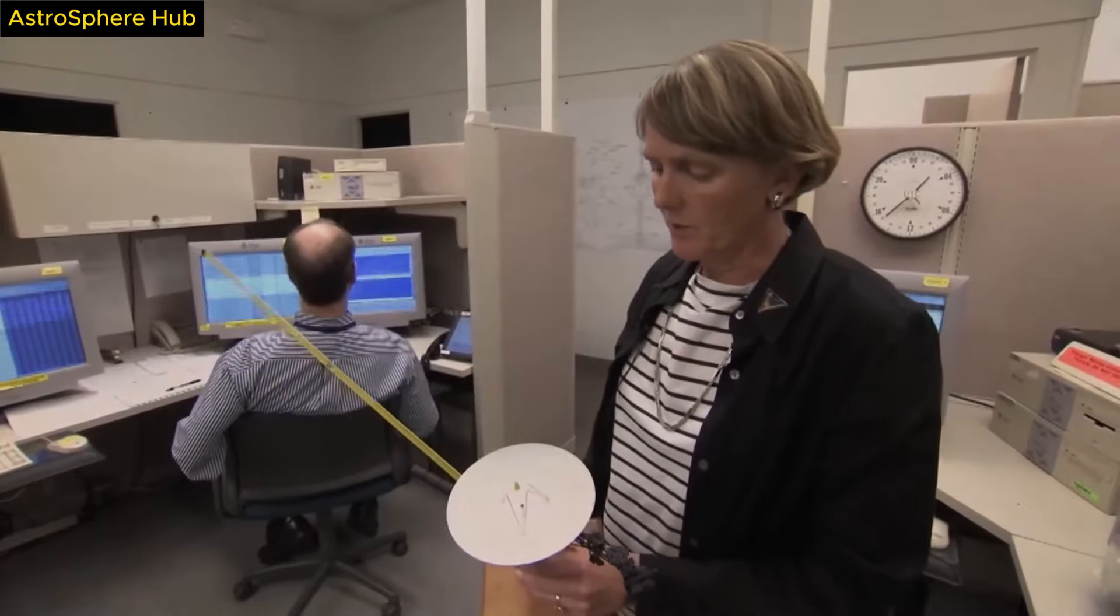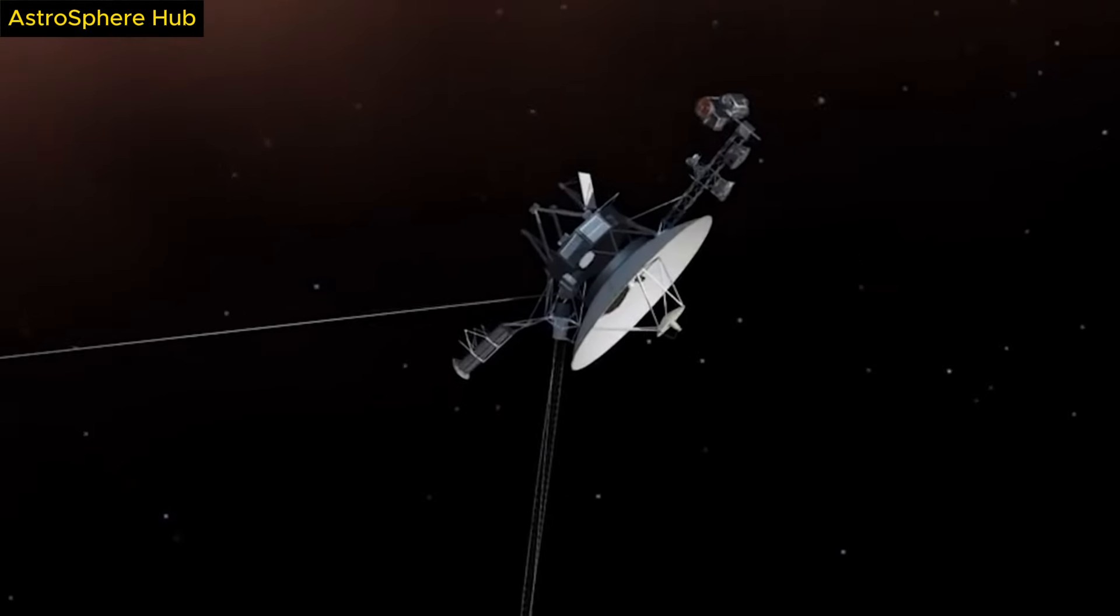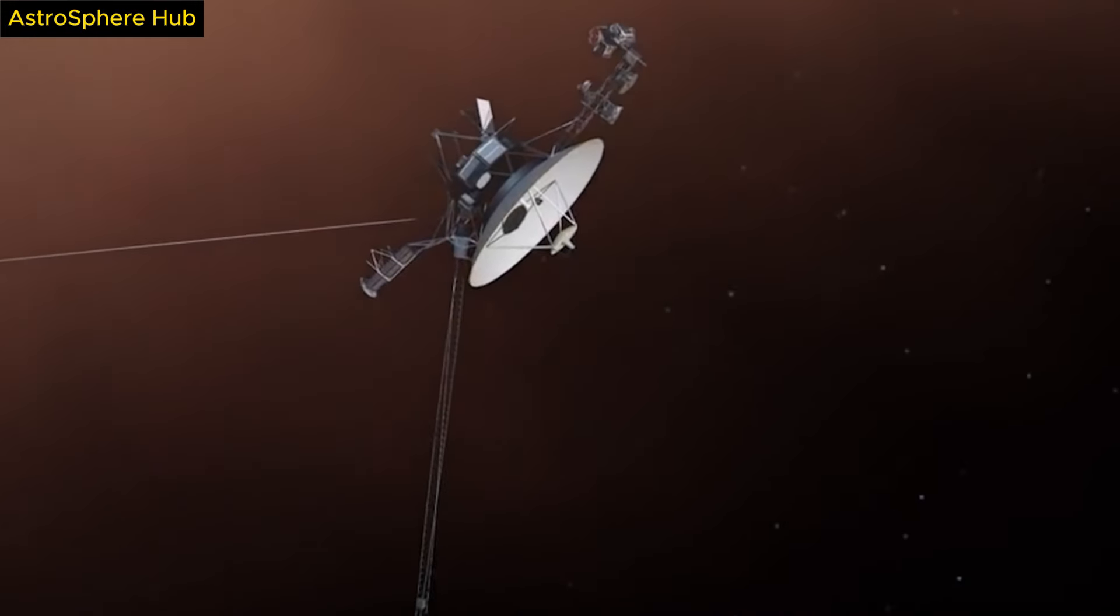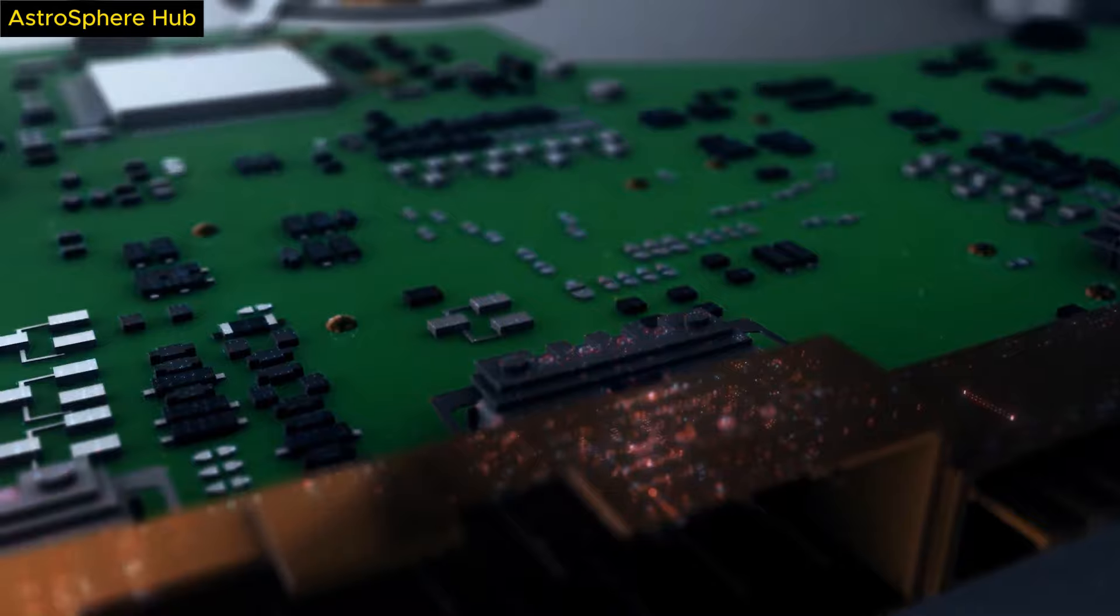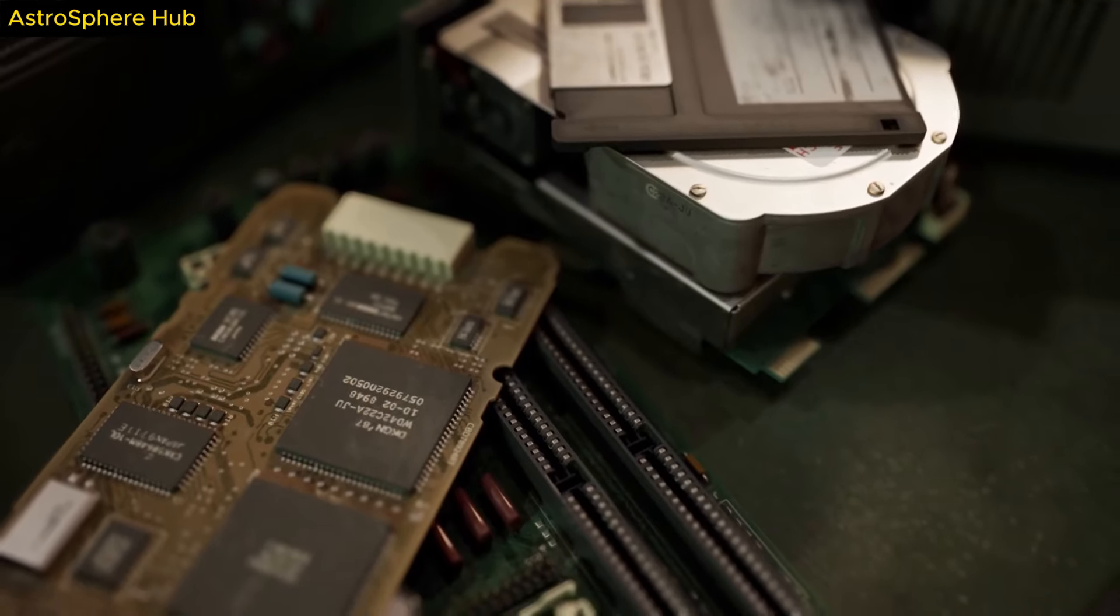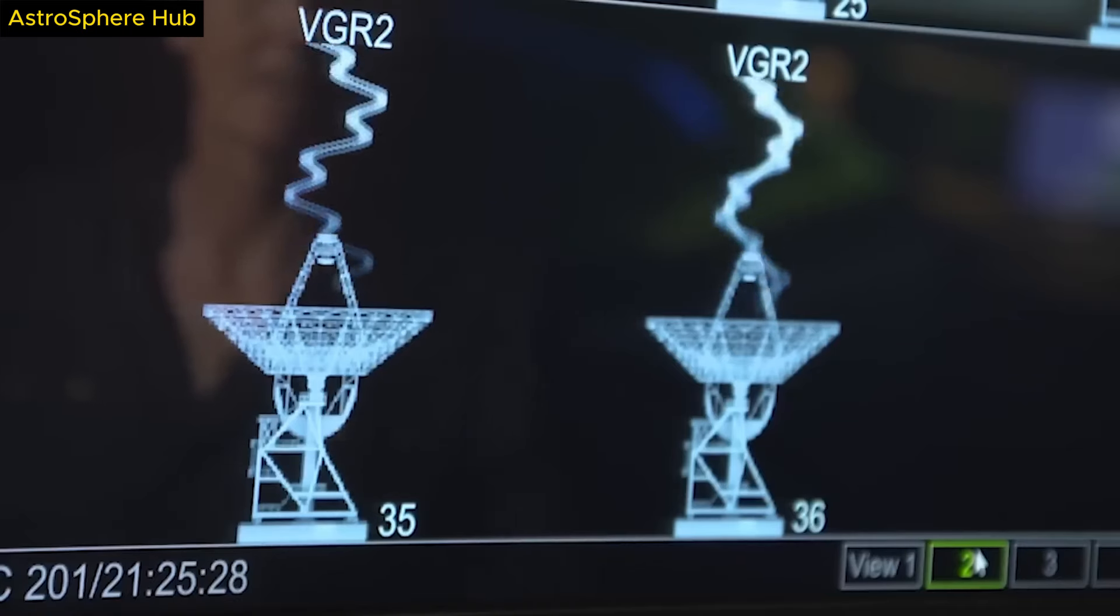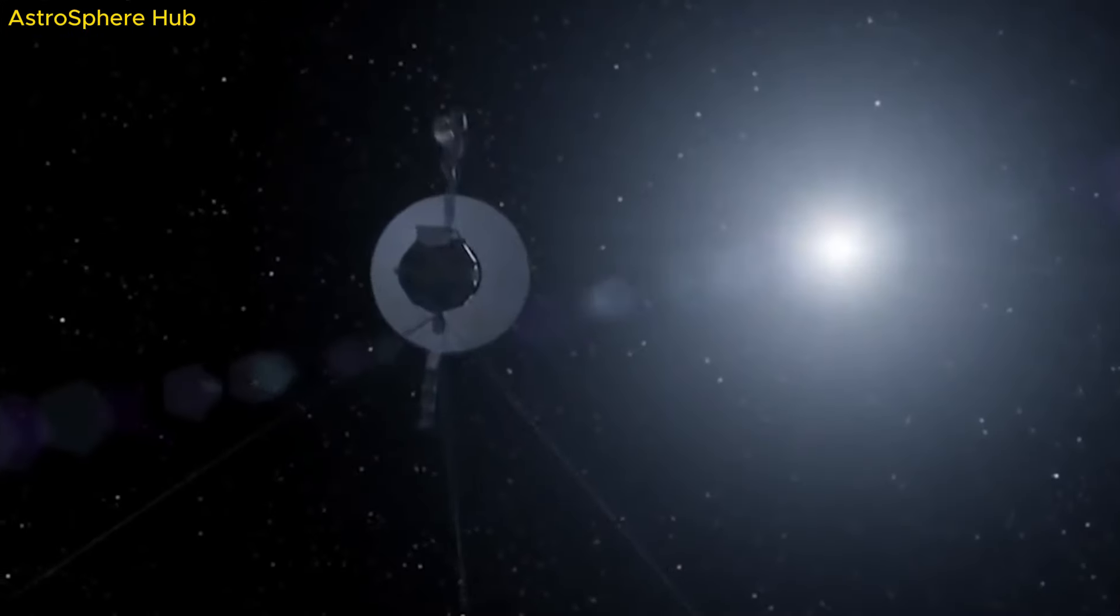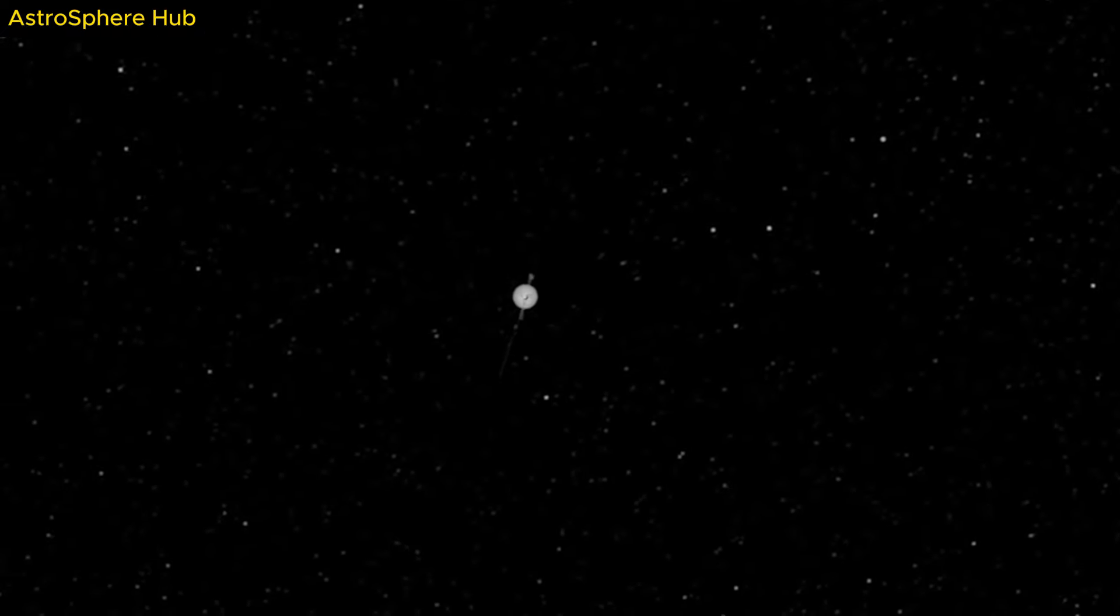The first fix was transmitted to the Voyager 1 probe on April 18. With a total of 30 billion miles to traverse from Earth to the spacecraft and back, the NASA team had to wait nearly two full days to receive a response from the probe. But on April 20, 2024, and with a huge sigh of relief, NASA got back a reply from the probe that the fix worked. Now, engineers will have to rewrite the rest of the flight data system's lost code in the coming weeks. This will include commands that will restore the probe's ability to send home more important science data.